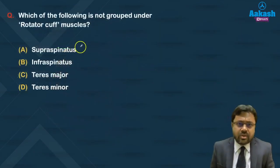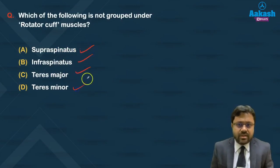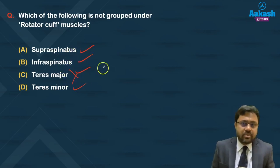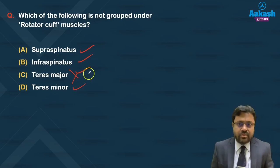Question: which of the following is not grouped under rotator cuff muscles — supraspinatus, infraspinatus, teres major, or teres minor? Obviously teres major is ruled out. The other three, along with subscapularis, form the rotator cuff muscles. So teres major is ruled out.